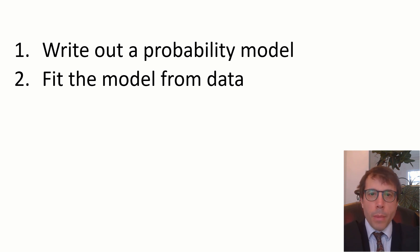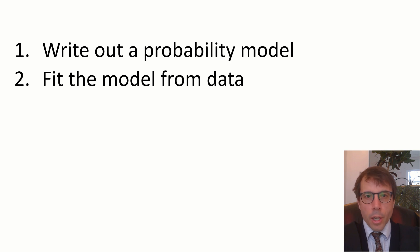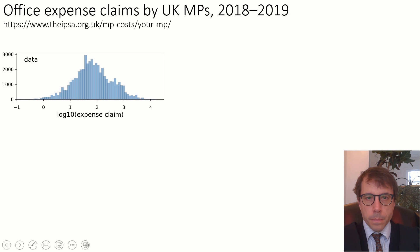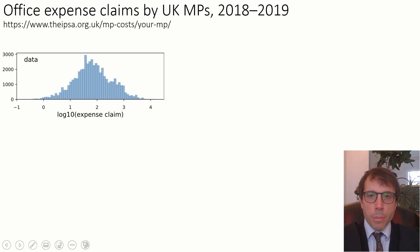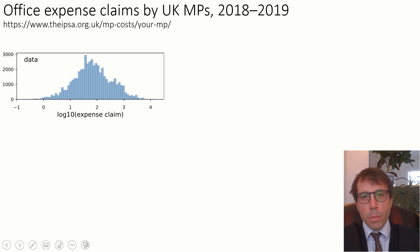So what exactly do I mean by a probability model? Let's look at two examples. The first is a model for office expense claims by MPs in the UK Parliament. I've plotted a histogram of claim amounts. More specifically, I've put the log of the claim amount on the x-axis, because otherwise the distribution of the many small amounts would be completely swamped by the few big claims.